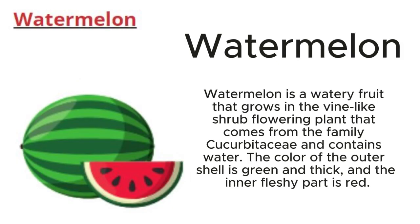Watermelon: Watermelon is a watery fruit that grows in the vine-like shrub flowering plant that comes from the family Cucurbitaceae, and contains water. The color of the outer shell is green and thick, and the inner fleshy part is red.